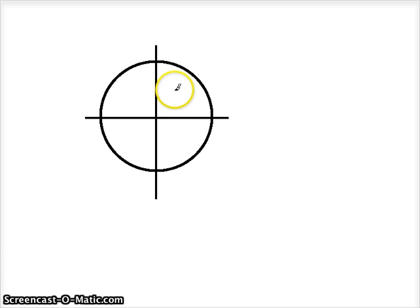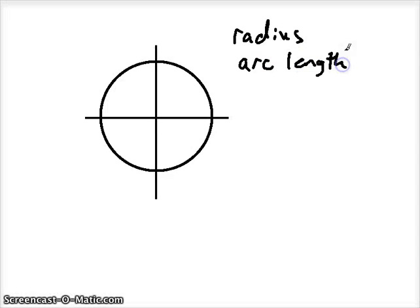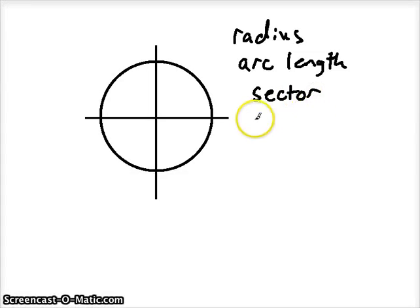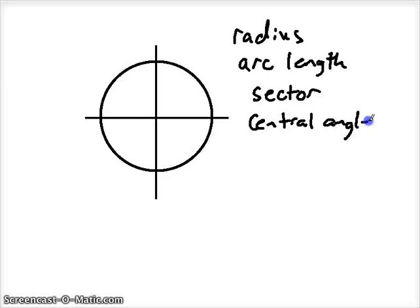Anytime you place a circle on a coordinate plane with the center at the origin of your coordinate plane, then we can talk about the following three things: radius length, arc length, and area of a sector, and we can talk about the measurement of a central angle.